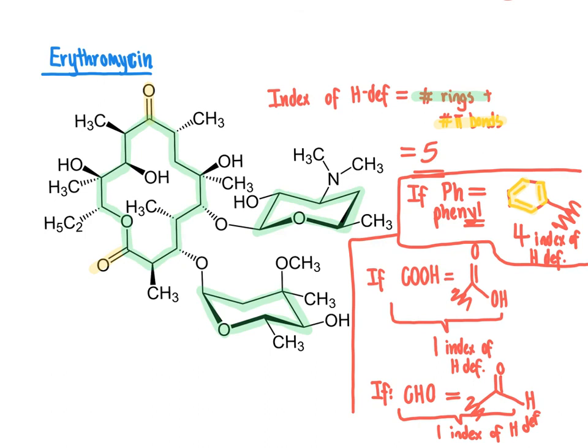Based on this discussion, you should now be comfortable looking at structures and determining their index of hydrogen deficiency. When given a molecular structure, you should also be able to work from a molecular formula to calculate the index of hydrogen deficiency using the formula we learned.